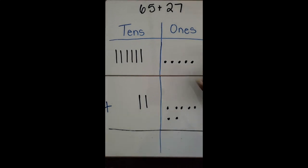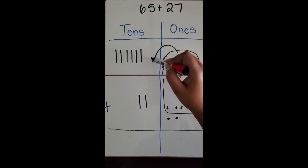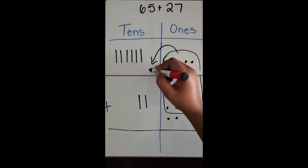Now I'm going to combine my tens and combine my ones. Up here I have five ones and seven ones. So I put those together, that equals ten. So I'm going to trade that out.